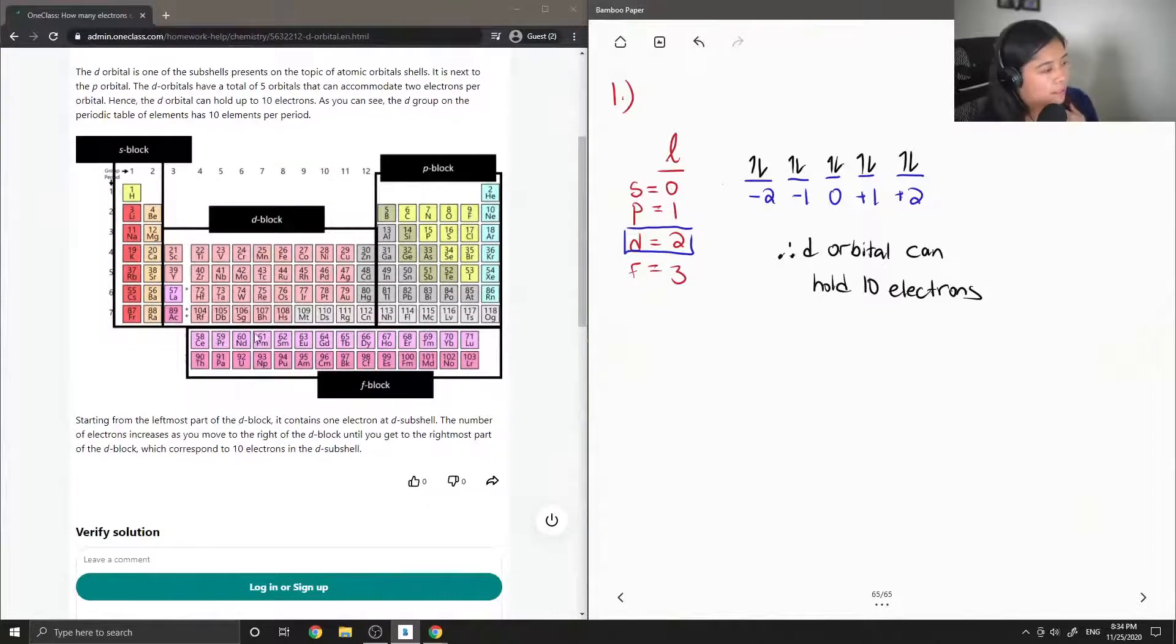And then lastly, the f block are just the last two rows at the bottom of the periodic table. So the lanthanides and actinides.